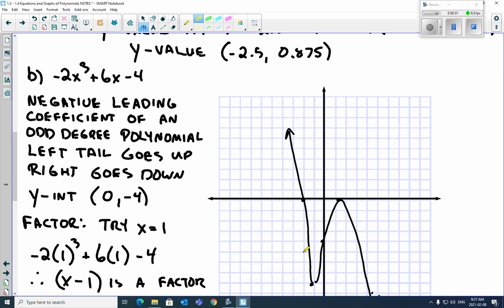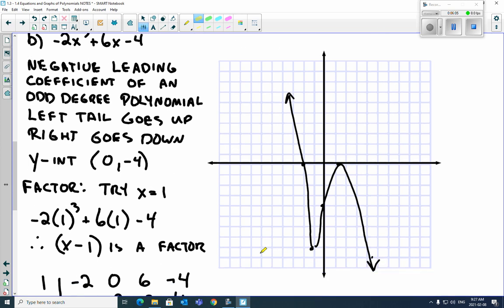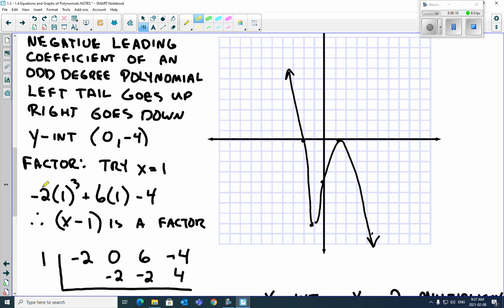Well, we need to factor this. So we can do a number of things. We can do binomial remainder theorem, which is what I did here. Try a positive 1. So you plug in positive 1 and you find, oh, does it equal 0? Yeah. So then we know x minus 1 is a factor.